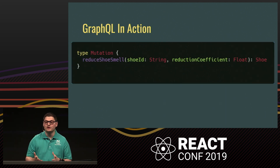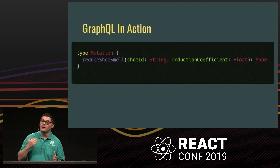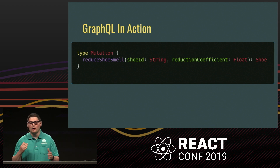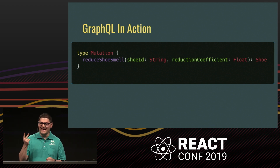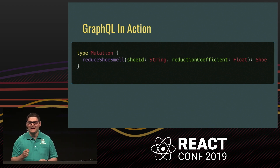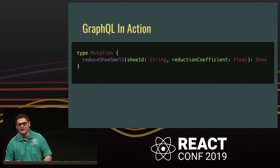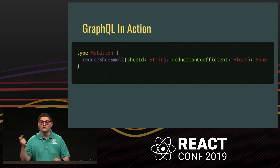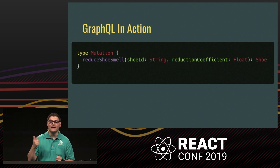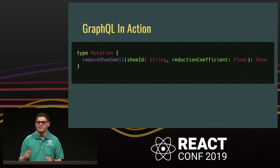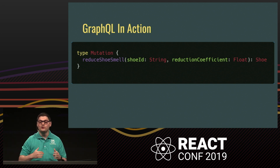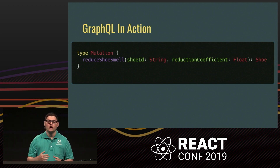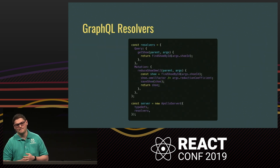We can also have mutations, which is more like a POST, PUT, and DELETE. Here we have our reduce shu smell mutation, which takes exactly two parameters. It will presumably mutate some database entity or something like that and then return out an object that looks like our shu type defined above. These queries and mutations are how your client will communicate with your server. You can define as many or as few queries and mutations as you'd like.